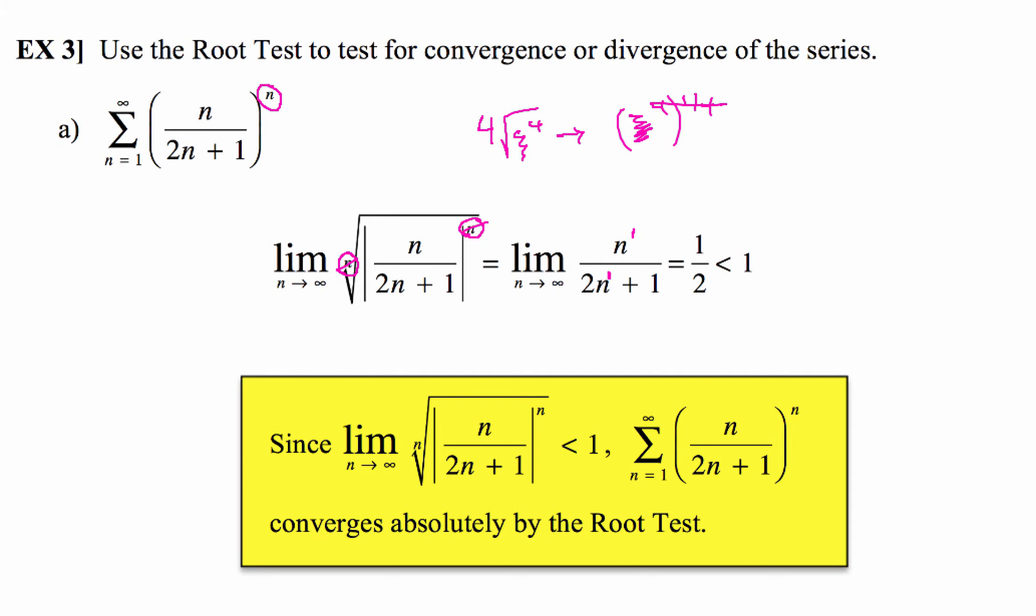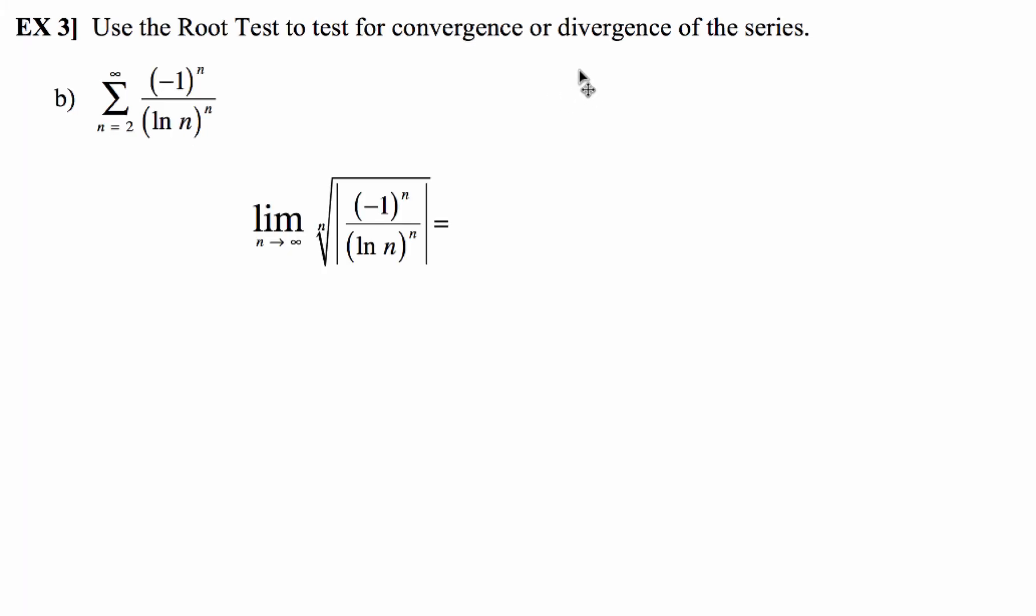Now let's take a look at example b, which is going to be similar. So in this case, we've got our series where we're going to have negative 1 to the nth power over natural log of n to the nth power. Since both of those are to the nth power, when we substitute that in there, of course what you want to do is kind of combine those, since they're both to the same power, so now you can write it to the nth power.